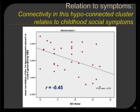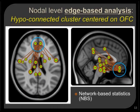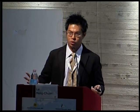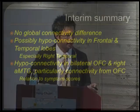More significantly, the mean connectivity within this hypo-connected network is negatively correlated with childhood symptoms measured by ADIR social subscale. That means for people with autism, the lower the connectivity within this network, the more severe the childhood autism symptoms as measured by ADIR social subscale.